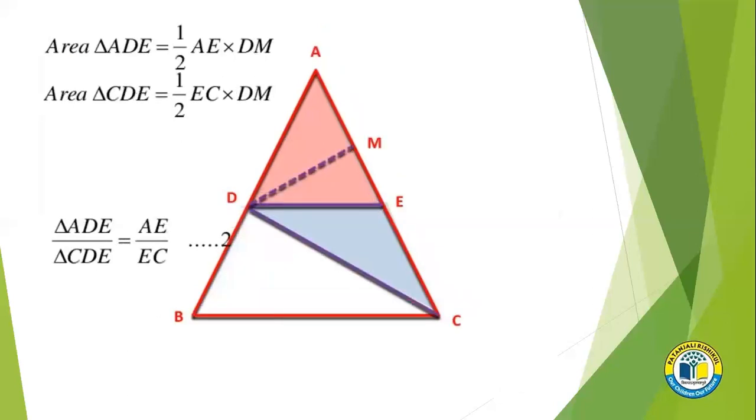Now we will take the right side of the triangle. Area of triangle ADE taking AE as base is half into AE into DM. And area of triangle CDE is equal to half into EC into DM. So their ratio will be AE upon EC. Consider this as equation 2.